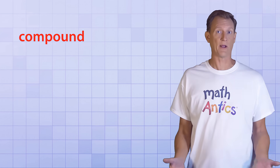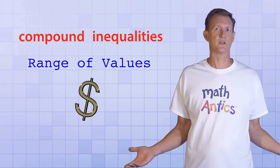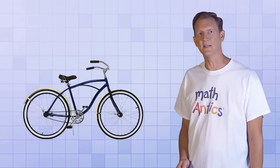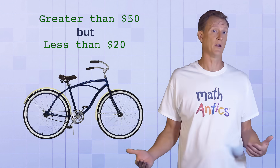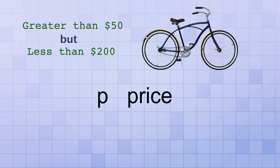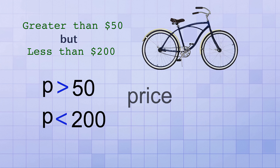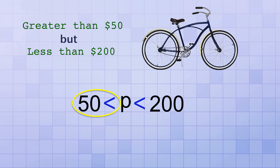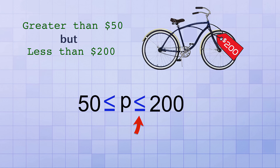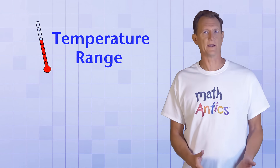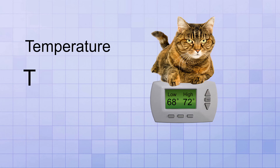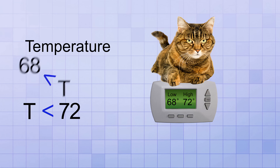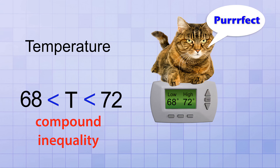One of the really useful things about compound inequalities is that they're great for specifying a range of values, like a price range. Suppose you want to buy a bicycle. You could specify that you want a bike that's greater than $50 but less than $200. Using P to stand for price, you could write those conditions individually as P is greater than $50 and P is less than $200, or combine them into one compound inequality. If you're okay with a bike costing exactly $50, you could change the first symbol to include the equal sign; if you're okay with it costing exactly $200, you could change the second symbol as well. For a temperature range, using T for temperature, you could say T is greater than 68 and T is less than 72 degrees Fahrenheit — the perfect temperature range for your cat.